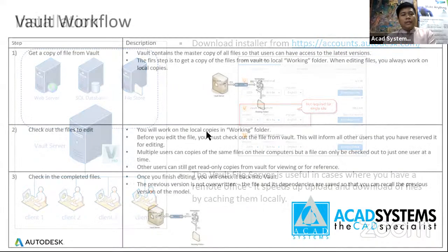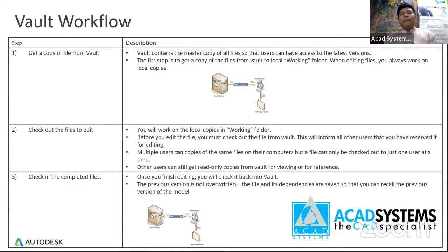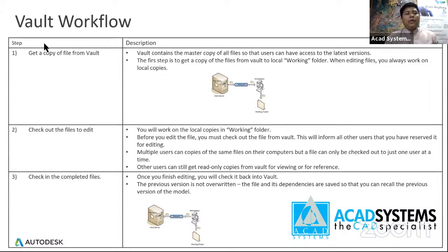The basic workflow for Vault: first, copy a file from Vault to another location or to your local drive. Second, check out the file to edit — by default files are stored on the Vault server. The checkout feature allows you to control multiple people using the same file. After editing, click check in to put the file back to your Vault server.